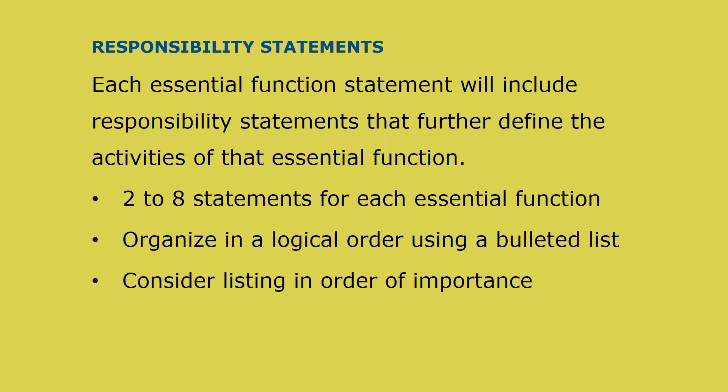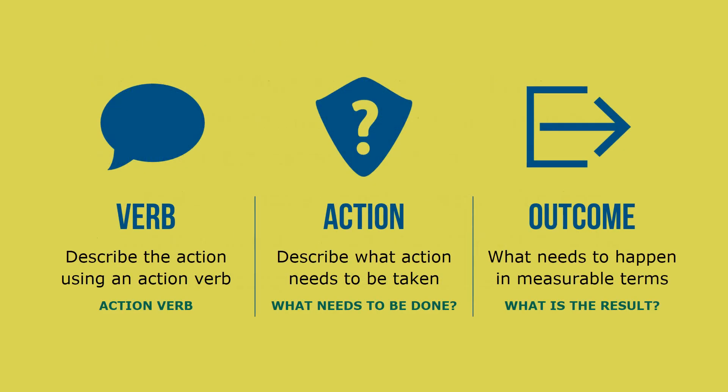Think about your essential functions as the buckets in which responsibility statements are carried. When developing your essential functions, use the Key Result Area or KRA formula. The formula provides simple guidance for writing your essential function and responsibility statements. It helps you start each bullet with an action verb, making your statement action-oriented.